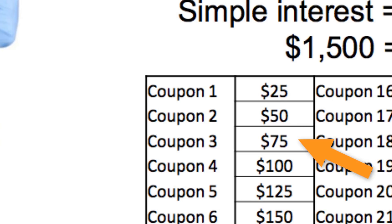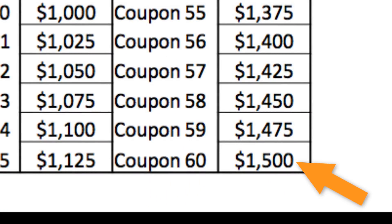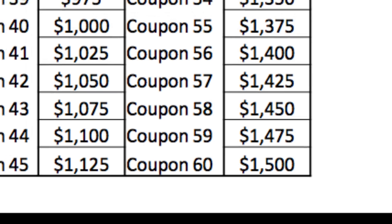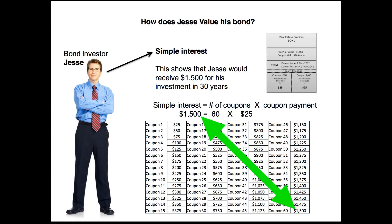After the third coupon Jesse would have $75, and after the fourth, $100. As you continue to scroll down through the chart, you can see that at coupon 60, Jesse has $1,500 from all the coupons. That was figured out simply: you take the number of coupons — 60 for this 30-year bond — and multiply by the coupon payment of $25, which adds up to $1,500. So if Jesse simply bought the bond on the very first day, held it through maturity, and never reinvested the coupon proceeds, the value of his investment would be $1,500.